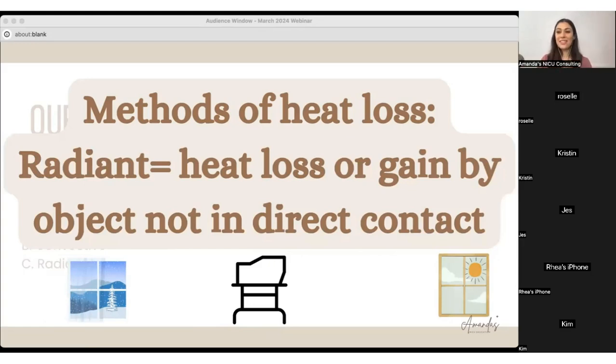I know a lot of you guys are in Nebraska and Pennsylvania and places that I think of that probably get really cold in the winter. If you're sitting next to the window and it's snowing outside, even though you're inside, just being directly next to that window, you're losing heat to that cold that is outside indirectly without even touching it. So radiant is heat loss or gain by an object not in direct contact.